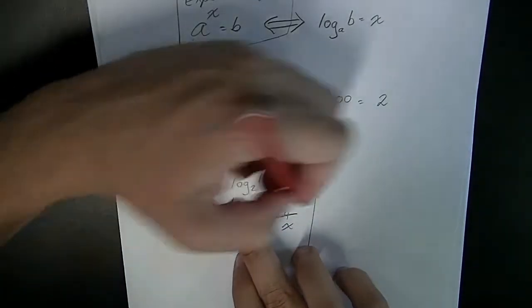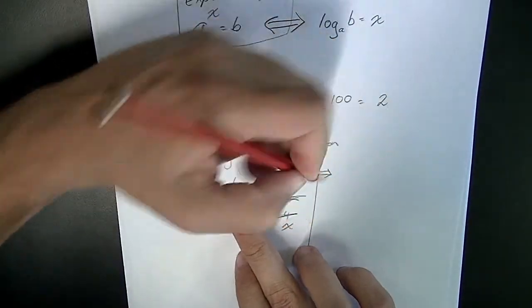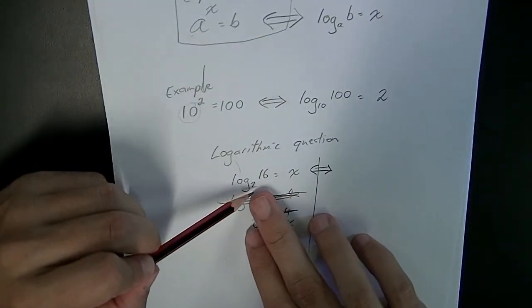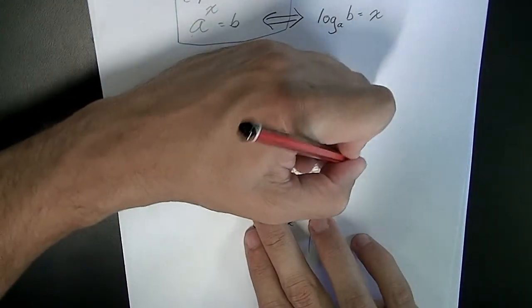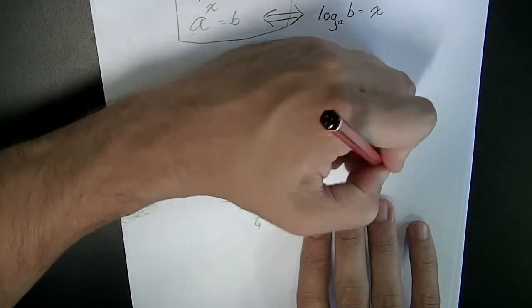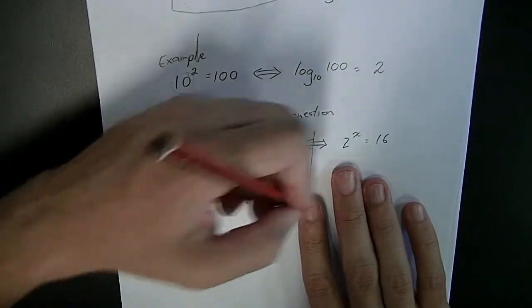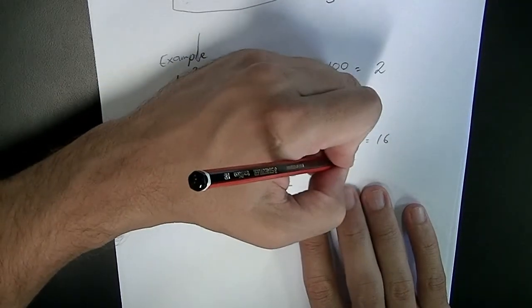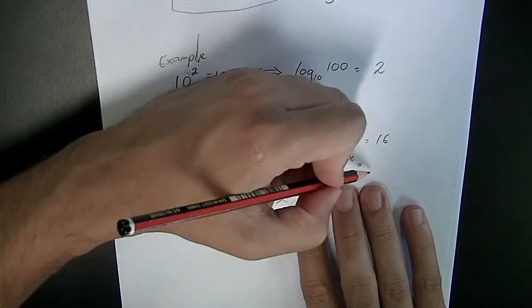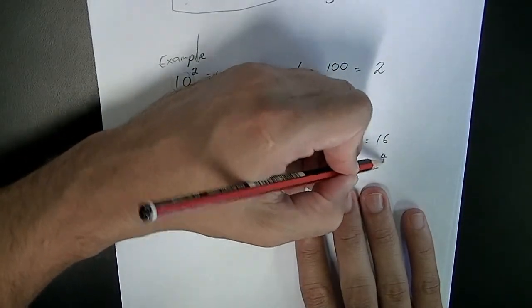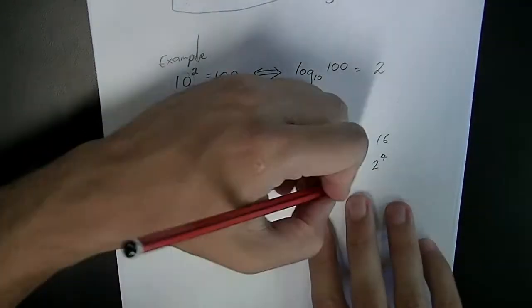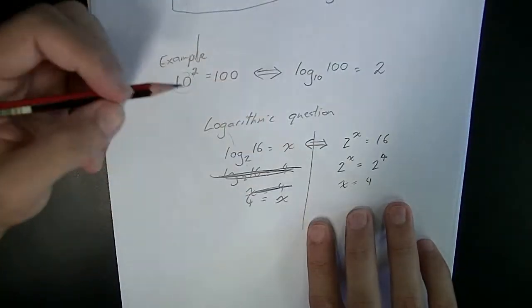This could have been written in exponential form if you wanted it to be. It would be 2 to the power of x equals 16, and you guys have learned how to solve that in the past. 2 to the power of x equals 2 to the power of 4, equate your powers, x equals 4.